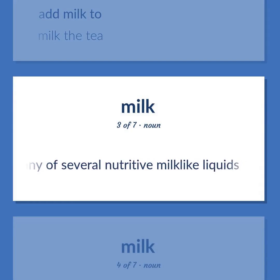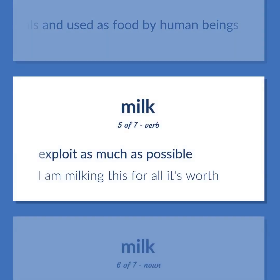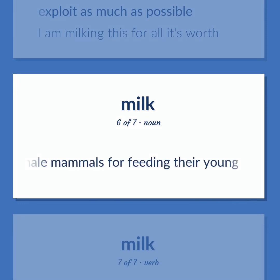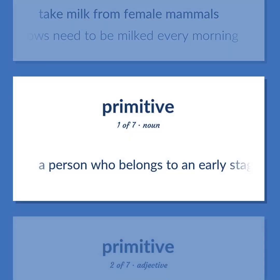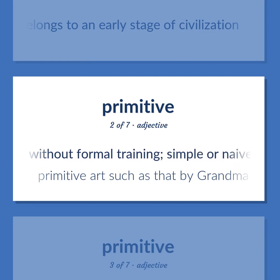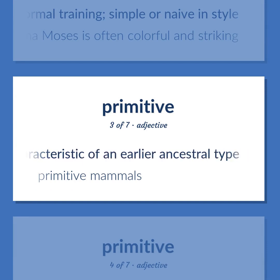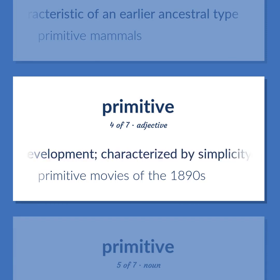Milk: any of several nutritive milk-like liquids. A white nutritious liquid secreted by mammals and used as food by human beings. Exploit as much as possible — I am milking this for all it's worth. Produced by mammary glands of female mammals for feeding their young. Take milk from female mammals — cows need to be milked every morning. Primitive: a person who belongs to an early stage of civilization. Of or created by one without formal training, simple or naive in style — primitive art such as that by Grandma Moses is often colorful and striking. Little evolved from or characteristic of an earlier ancestral type — primitive mammals. Belonging to an early stage of technical development, characterized by simplicity and, often, crudeness.